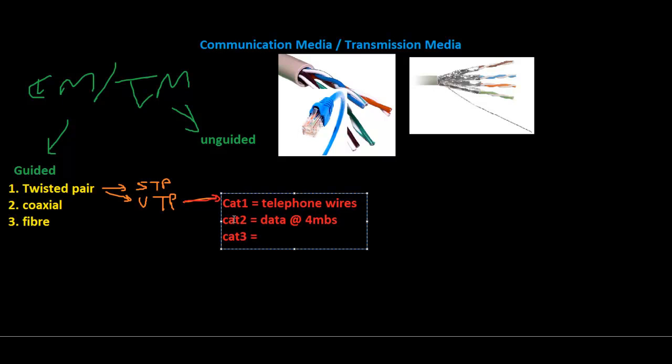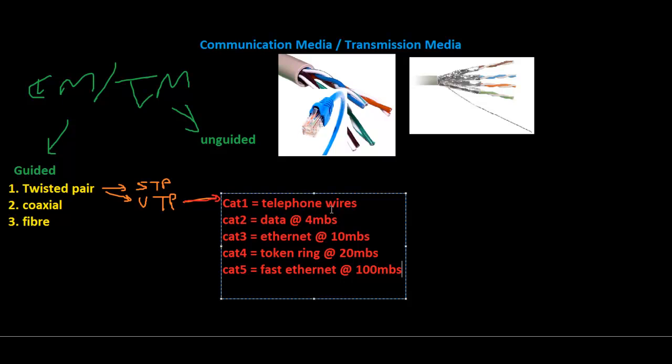Cat 4 for token ring transmits data up to 20 megabits per second. And Cat 5 or Fast Ethernet, which is what we really use in our homes to get internet, transmits data at 100 megabits per second.